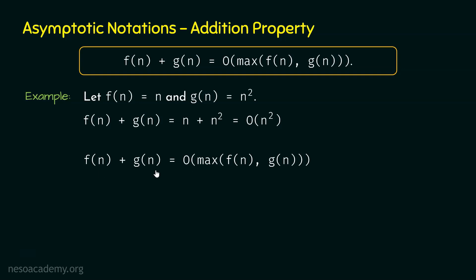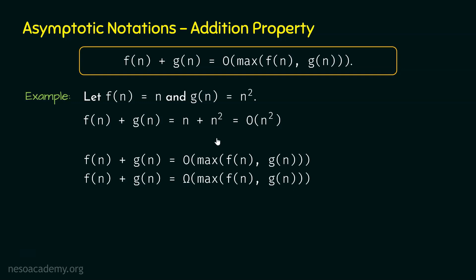What about the other notations — big omega and big theta? f(n) plus g(n) is also big omega of maximum of f(n), g(n). If we look at this example, here we have n plus n square and here we have n square. For c equal to 1, the right hand side is less than the left hand side. Hence, n plus n square is big omega of n square as well.